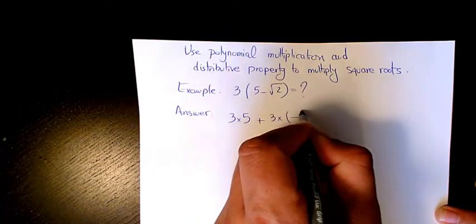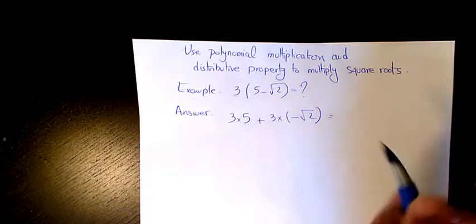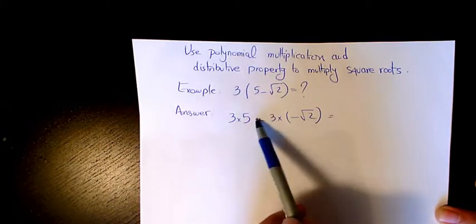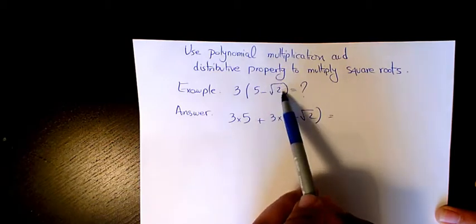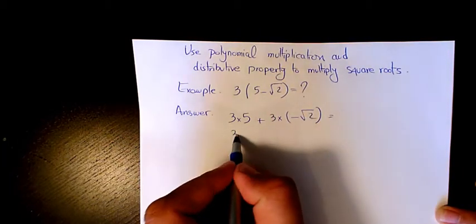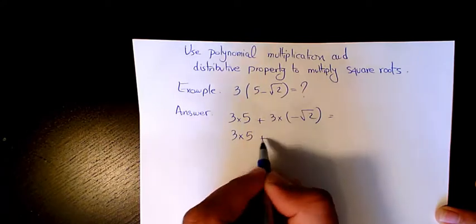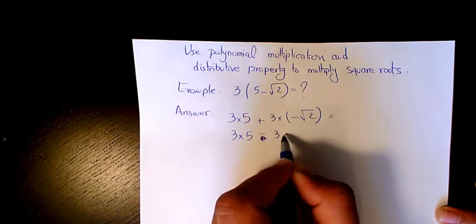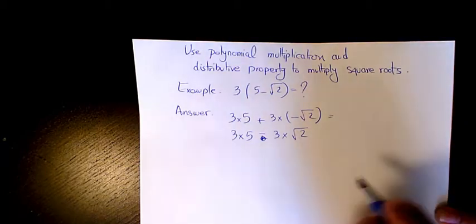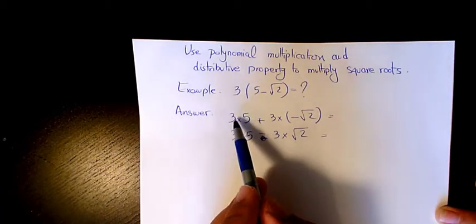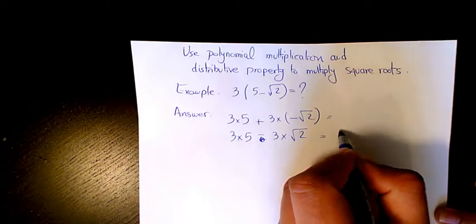3 times 5 plus 3 times negative √2, or you can say 3 times 5 plus or minus 3 times √2. Both of them are the same thing. So 3 times 5 is 15.